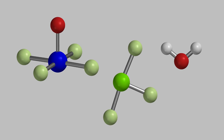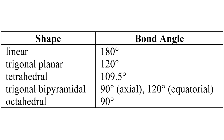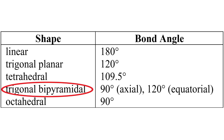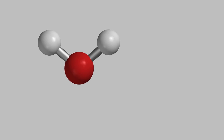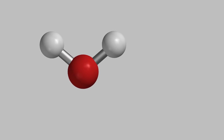In the last video, we saw that many molecules have one of these five shapes, depending on whether they have two, three, four, five, or six bonds on the central atom. But we also know that lots of molecules, including really common ones like water, don't have any of these shapes.